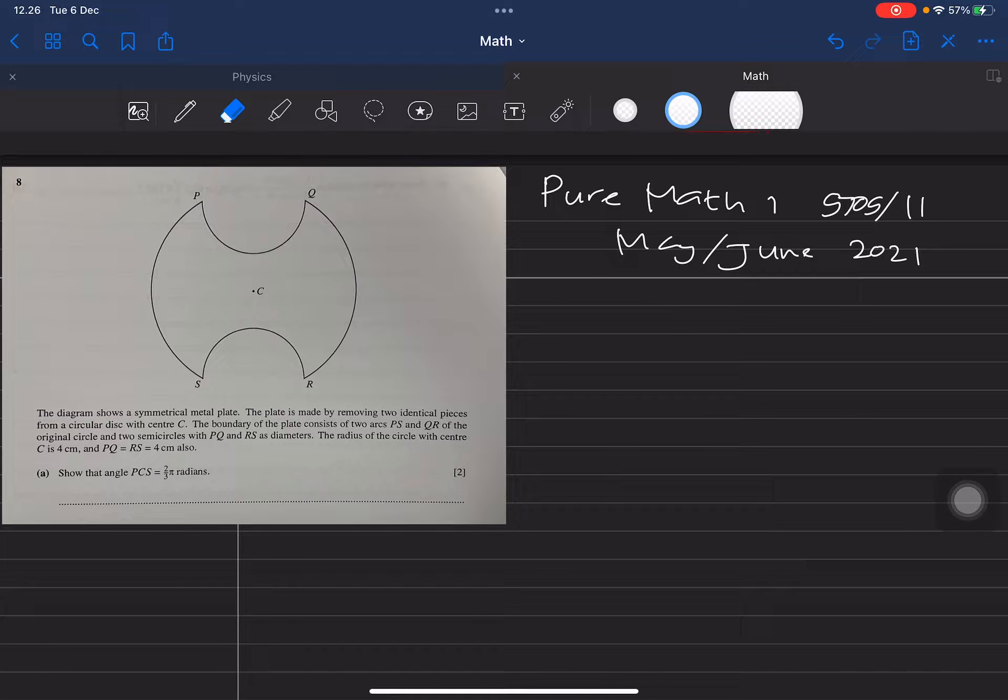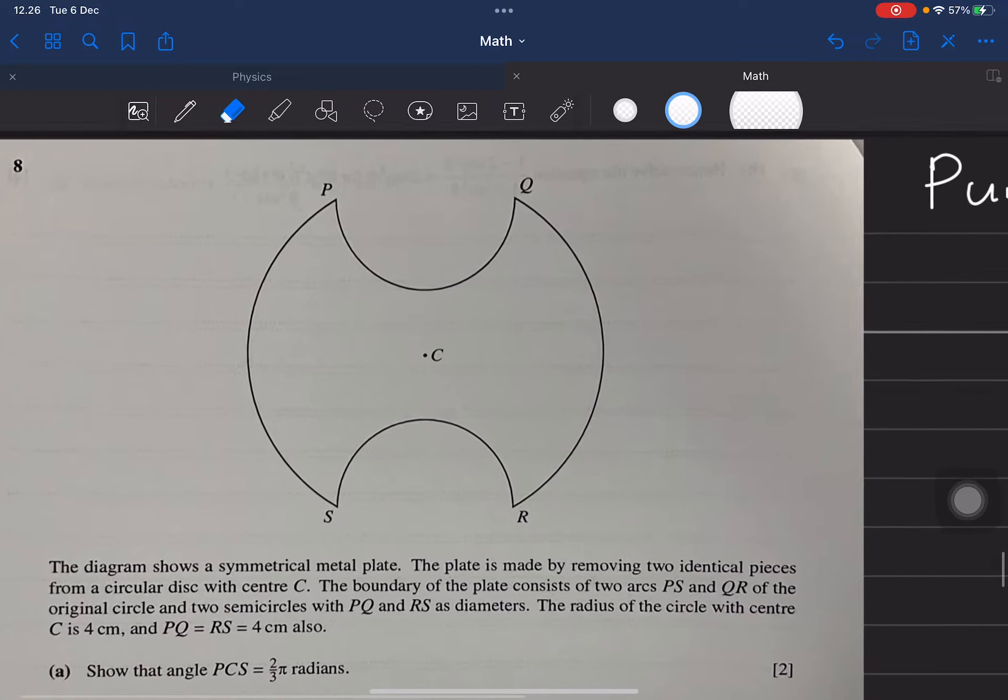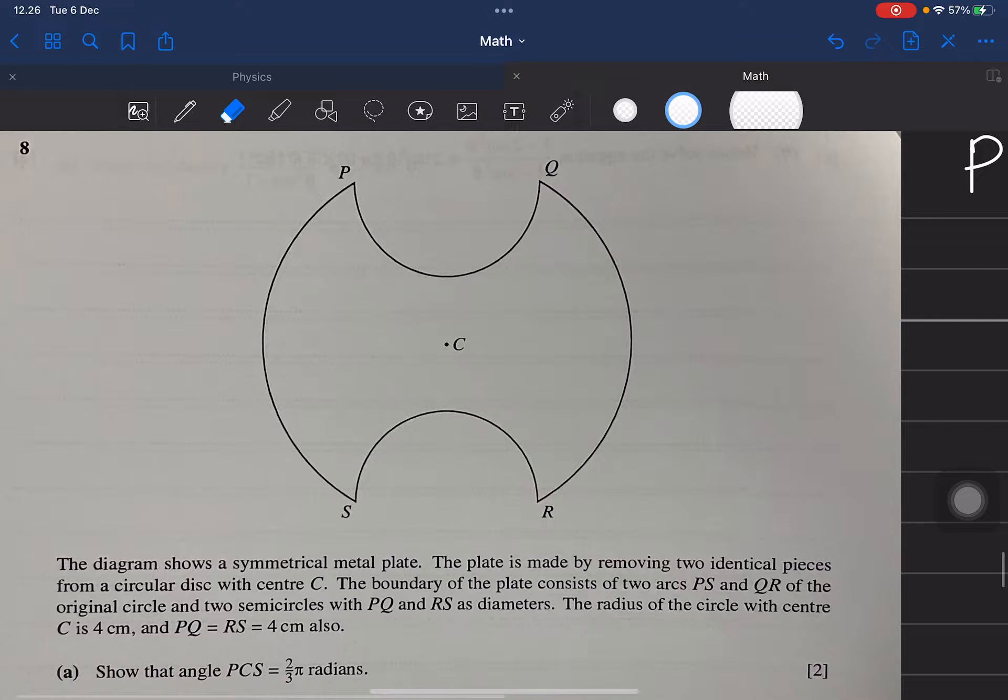The radius of the circle with center C is 4 centimeters, and PQ equals RS equals 4 centimeters, so that the angle PCS is 2π over 3 radians. PCS, check this.